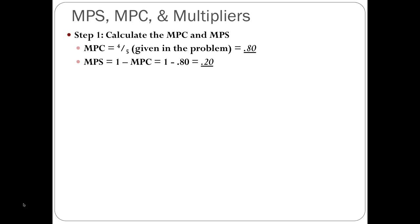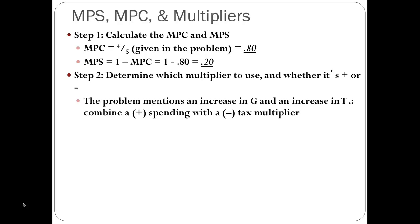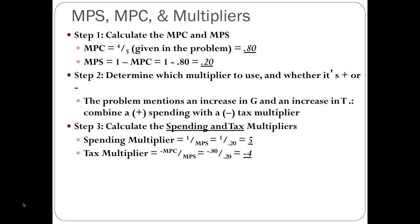Now we determine which multipliers to use. The problem mentions an increase in government spending and an increase in taxes, so we'll have two multipliers: a positive spending multiplier and a negative tax multiplier. The spending multiplier is 1 over MPS: 1 over 0.20 equals 5. The tax multiplier is negative MPC over MPS: negative 0.8 over 0.2 equals negative 4. Our spending multiplier is 5; our tax multiplier is negative 4.